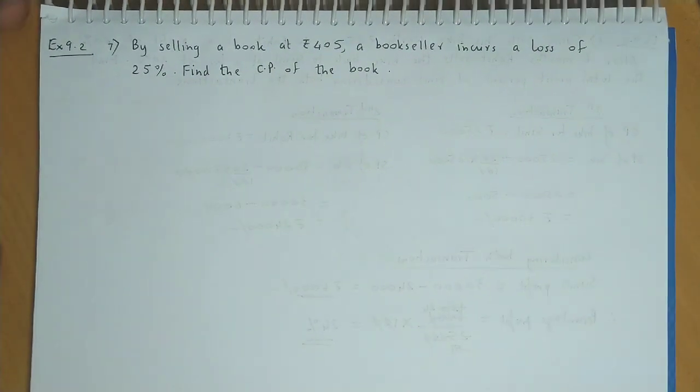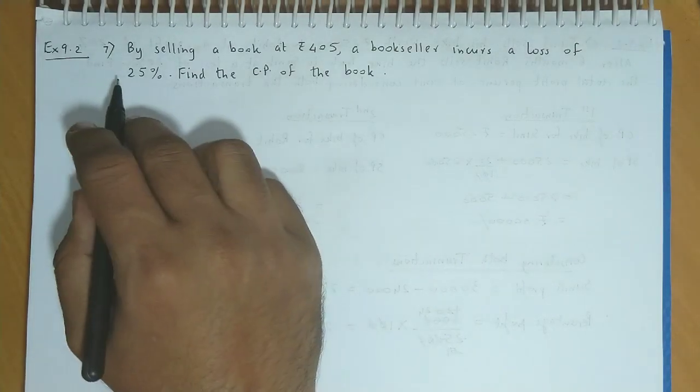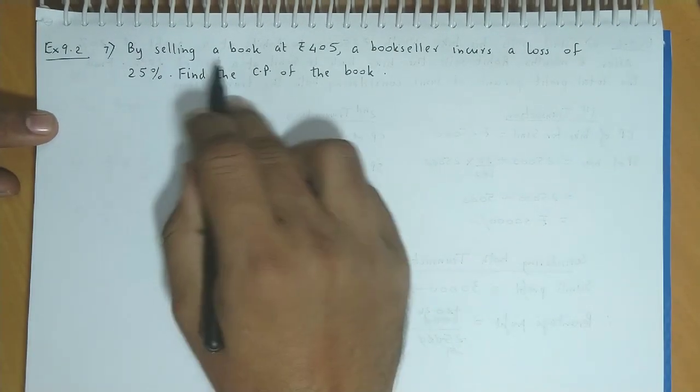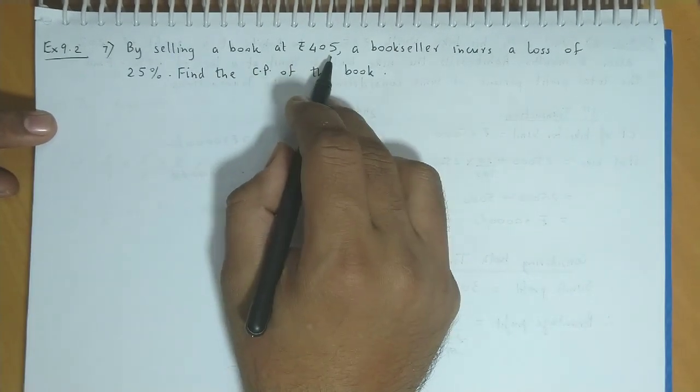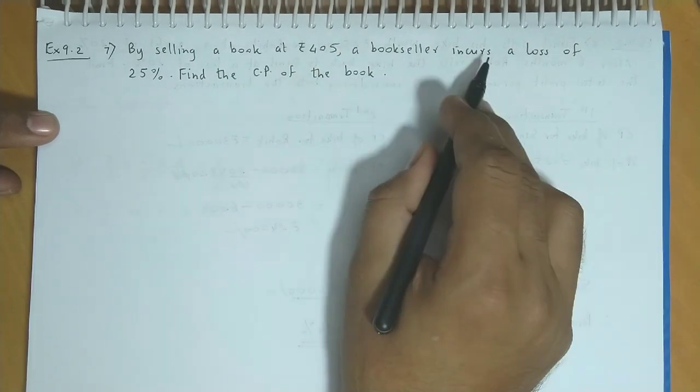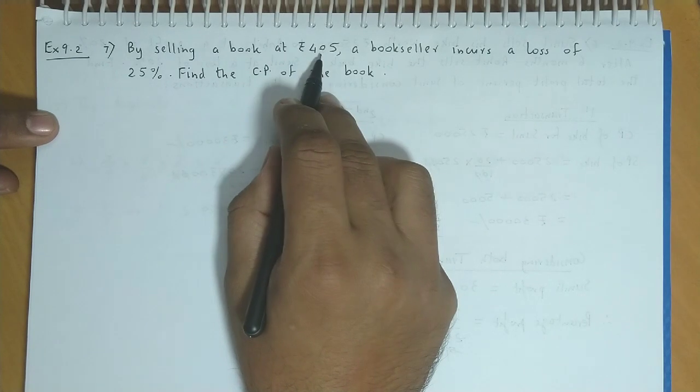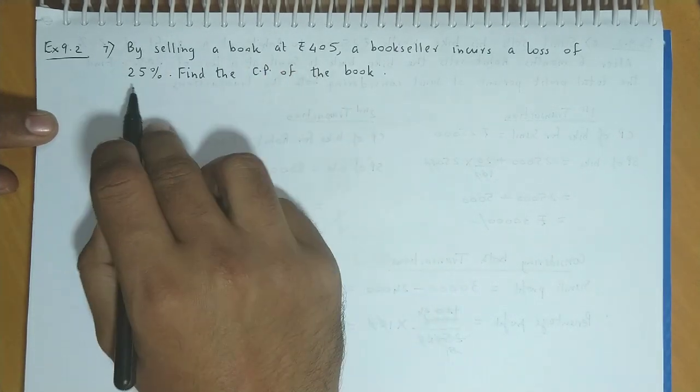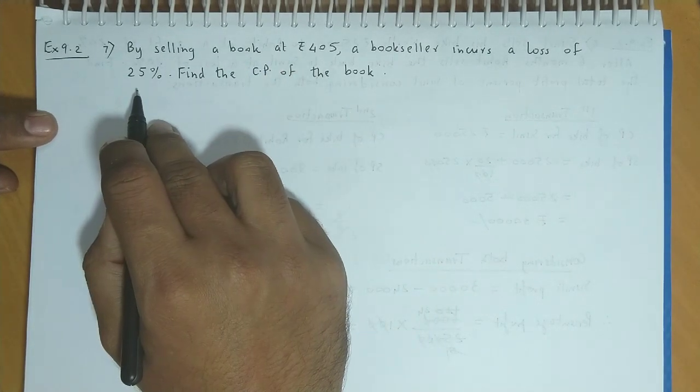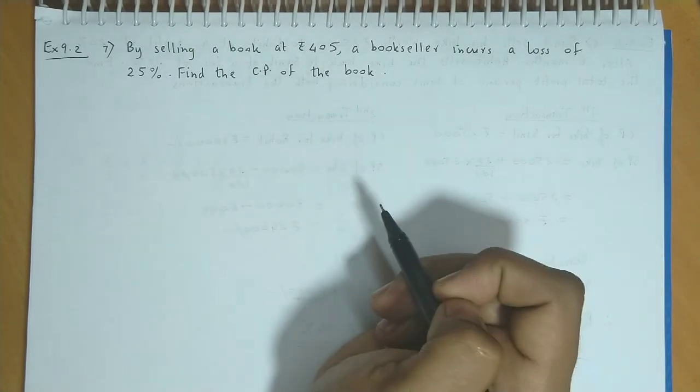Exercise 9.2, Question number 7: By selling a book at Rs. 405, a bookseller incurs a loss of 25%. Find the cost price of the book.